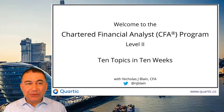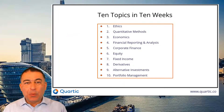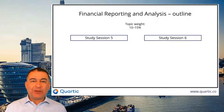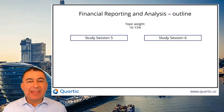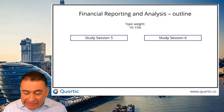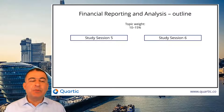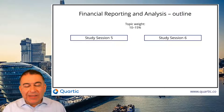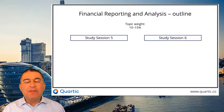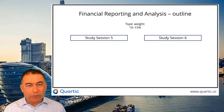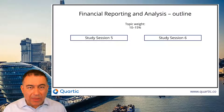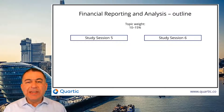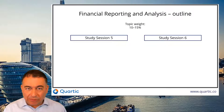Hello, welcome to CFA Level 2. This is Nick at Quartic with 10 topics in 10 weeks. This week we're looking at financial reporting and analysis. It's a fairly big, pretty detailed area — 10 to 15 percent, which means 12 to 18 questions in your exam. This is an area that divides the accountants and non-accountants amongst us. If you've got an accounting background, this is much more straightforward. If you really struggled with FRA at Level 1, you're going to need to put a lot of time into it this year as well.